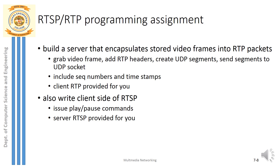Rather than burdening the sender with encapsulation, a separate server can handle the encapsulation of RTP packets. When RTP packets are generated, they can go to a separate server where the encapsulation is done. The server can also add the sequence number and timestamp to those RTP packets, and once everything is done, the packets are given to the client for sending.